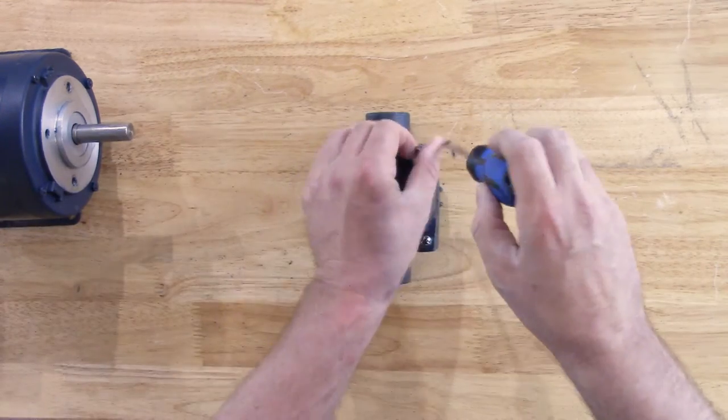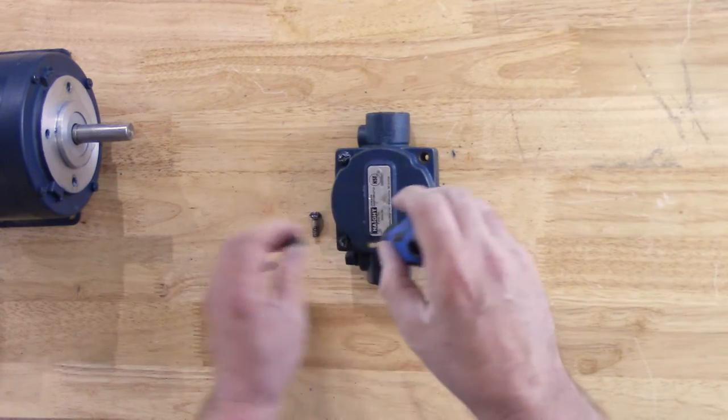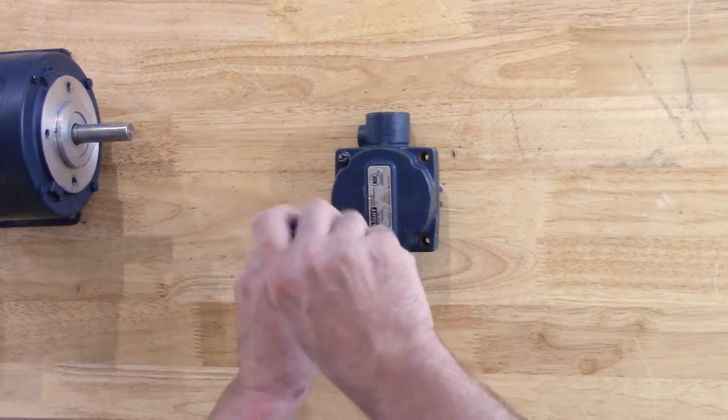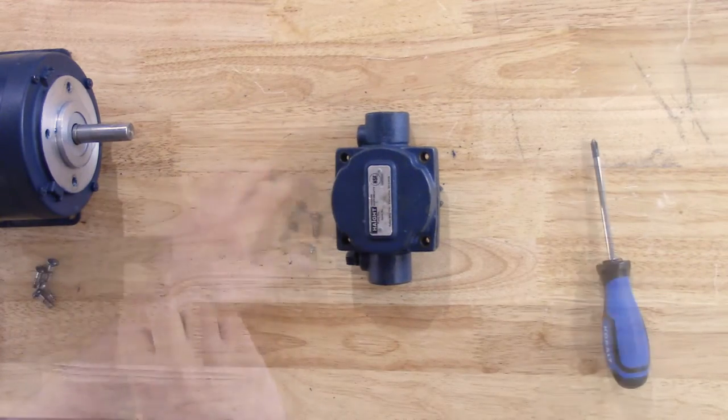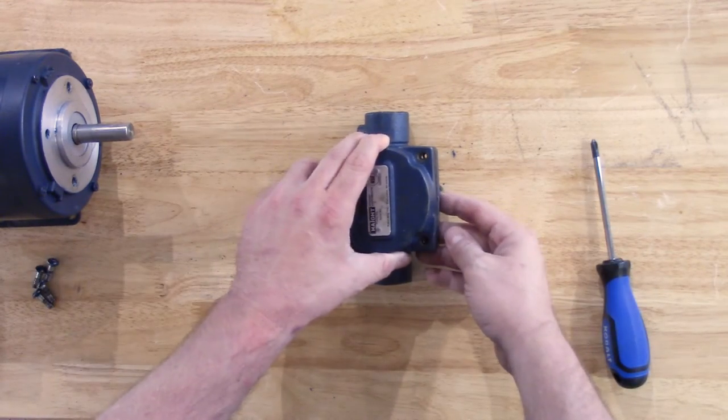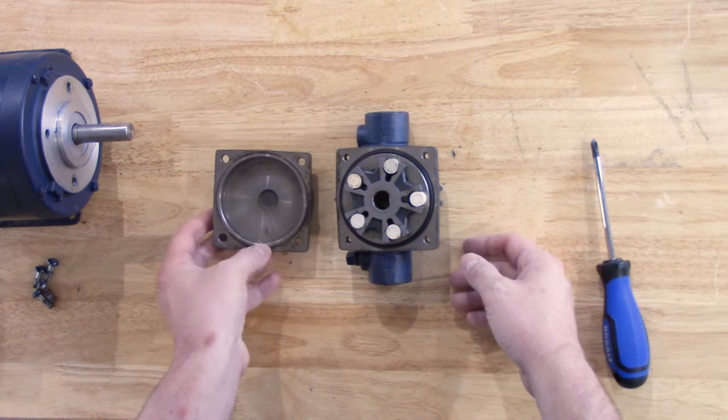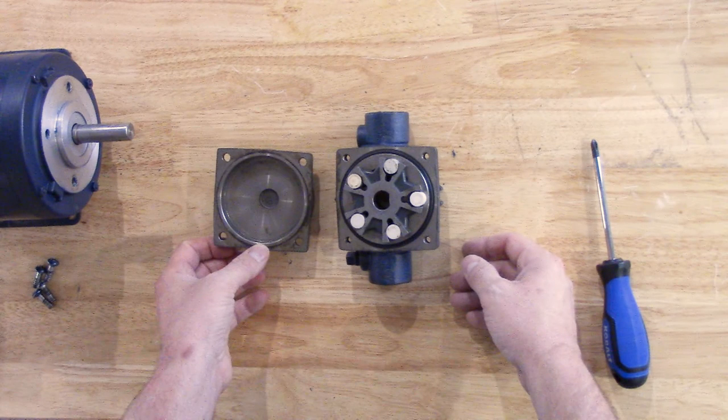After we have the inside of the pump housing clean, we can remove our four bolts that hold our pump cap in place. Now that we have our pump cap bolts removed, we can separate our cap. At this time, we want to make sure that we inspect our pump O-ring as well for any nicks or flat spotting, as this is a good time to replace this O-ring.